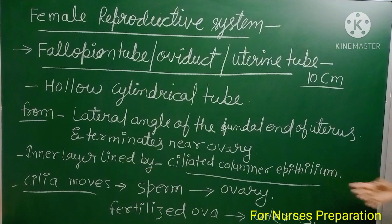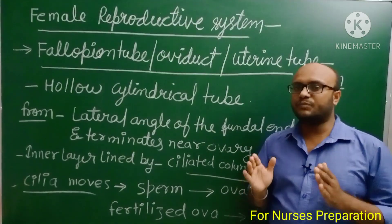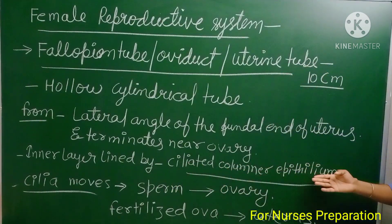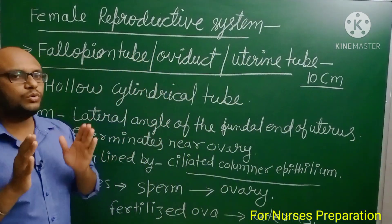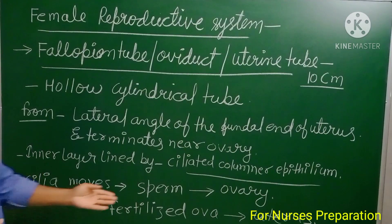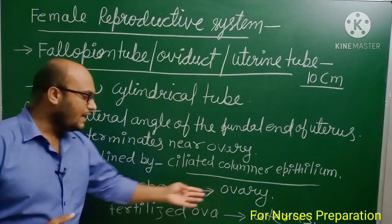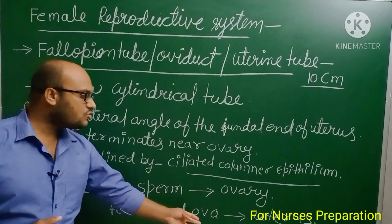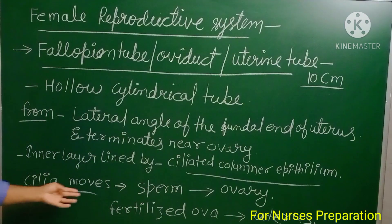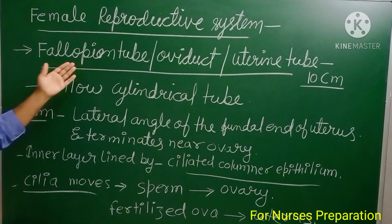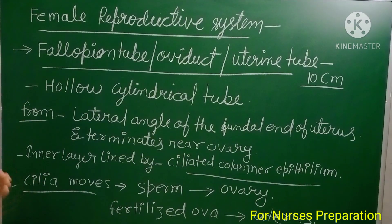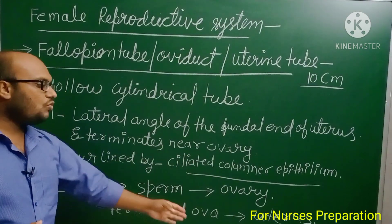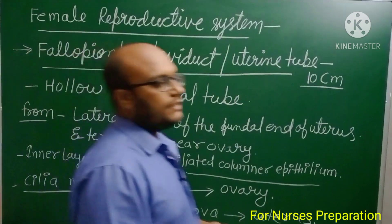The inner layer of the fallopian tube is lined by ciliated columnar epithelium. Cilia are hair-like growths that help in the movement of sperm towards the ovary, and after fertilization, the fertilized ovum is moved towards the uterus with the help of these cilia.